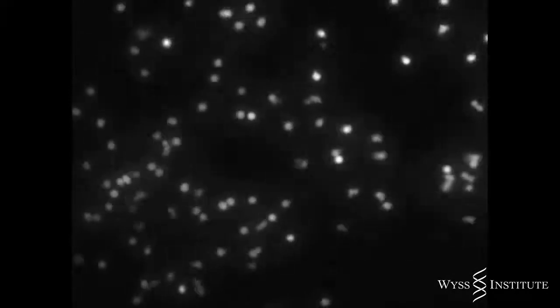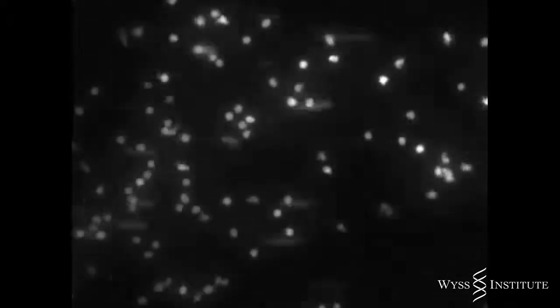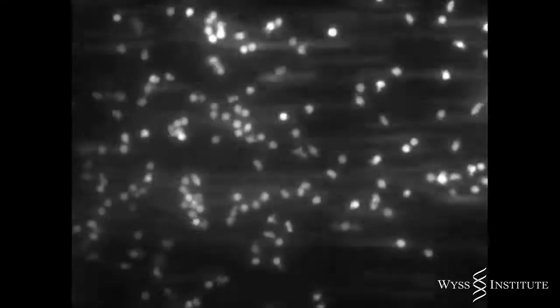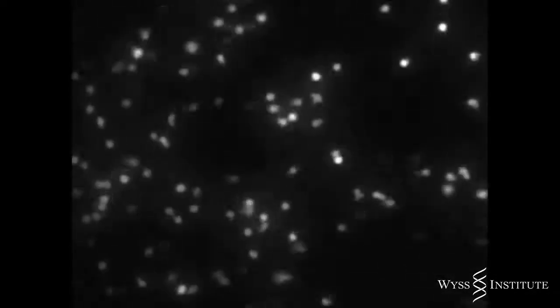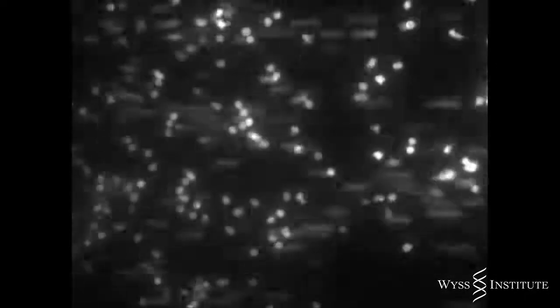But when we infect the air channel by adding bacteria, the immune cells abruptly stick to the surfaces of the capillary cells on the opposite side of the membrane, located directly below the infection site.